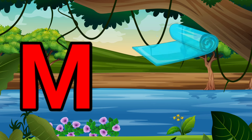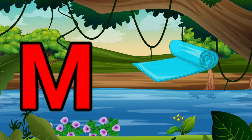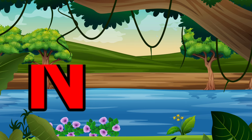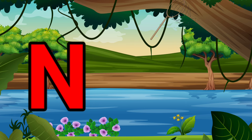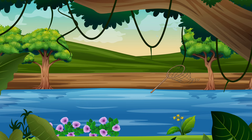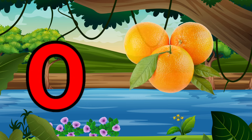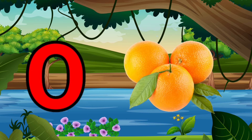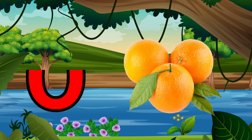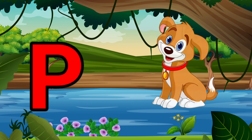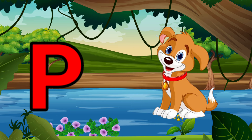M is for Mat, M-M-Mat. N is for Net, N-N-Net. O is for Orange, O-O-Orange. P is for Pet, P-P-Pet.